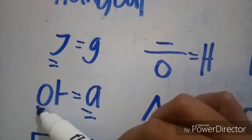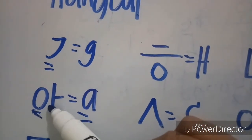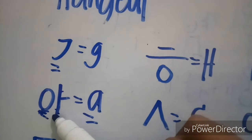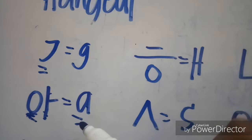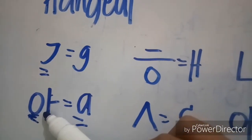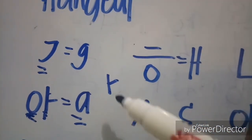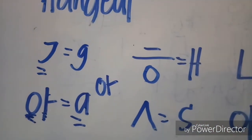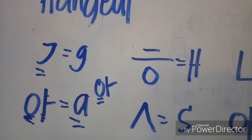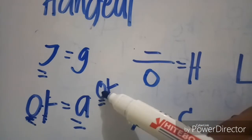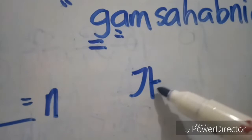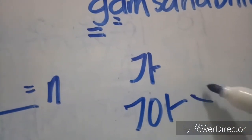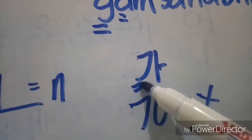If you are going to write this consonant alone, you cannot read it as 'A'. You need to have this circle in front of this vowel for you to be able to read it as 'A'. If you write it alone like that, you cannot create a sound. So you need to attach — you need to write first the consonant, but it doesn't have a sound on its own.